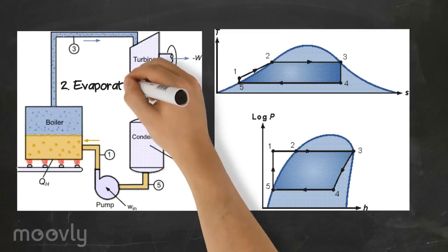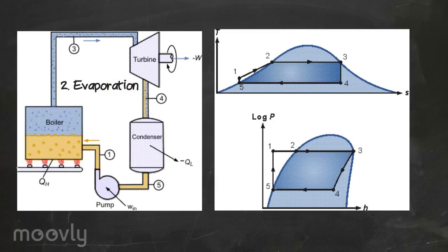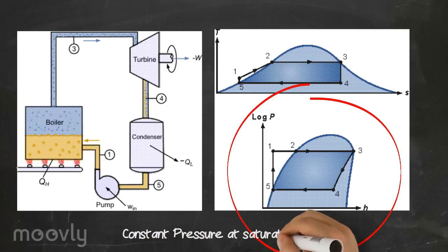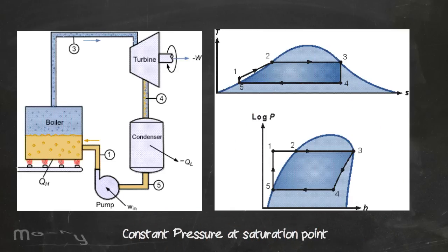Then in step 2, further addition of energy causes evaporation of the liquid until it is fully converted to saturated steam. Note in the pH diagram that the process is done at constant pressure. Also, that at saturation point, the temperature is constant, as you can see in the TS diagram.